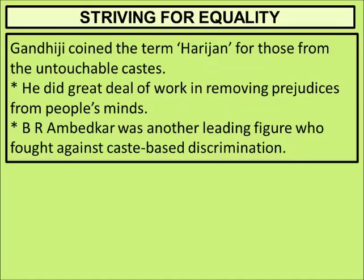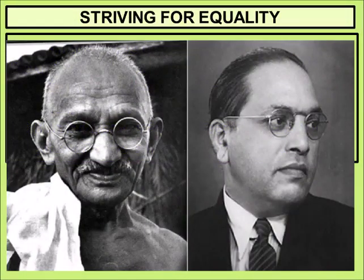Striving for equality: Gandhi Ji coined the term 'Harijan' for those from the untouchable caste. Harijan means 'the people of God.' He did a great deal of work in removing prejudices from people's minds — he used to go to their huts, eat with them, and sit with them. B.R. Ambedkar was another leading figure who fought against caste-based discrimination. These two people worked a lot for the welfare of untouchables and Dalit people.